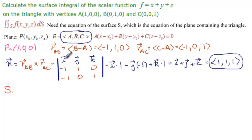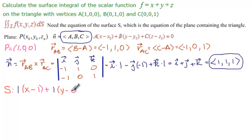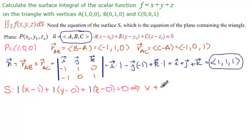Our surface, which is the equation of the plane, uses A=1, B=1, C=1 from the normal and the point (1,0,0). So: 1·(x-1) + 1·(y-0) + 1·(z-0) = 0, which simplifies to x plus y plus z equals 1. We're not going to circle this yet because we have to see what kind of formula we need in order to solve this.